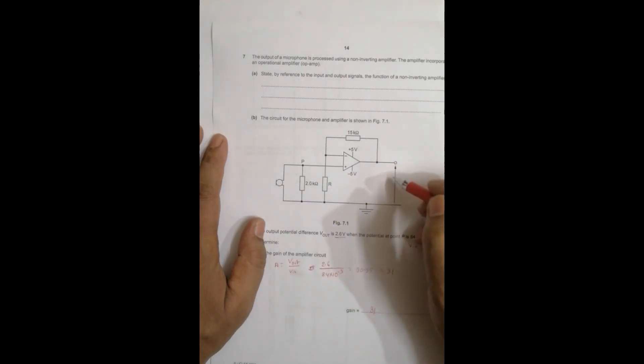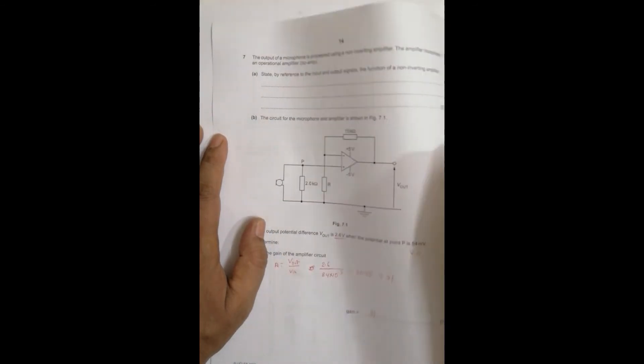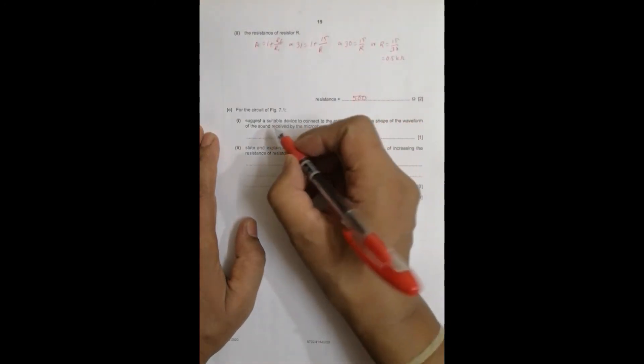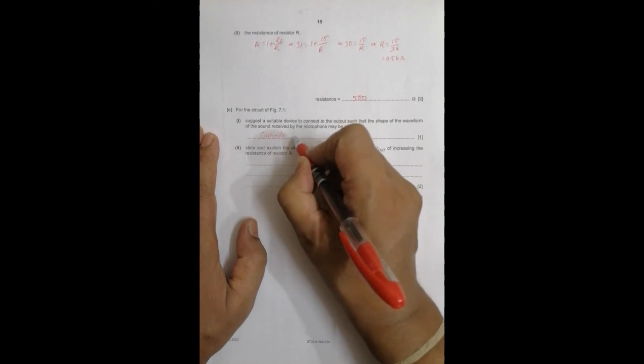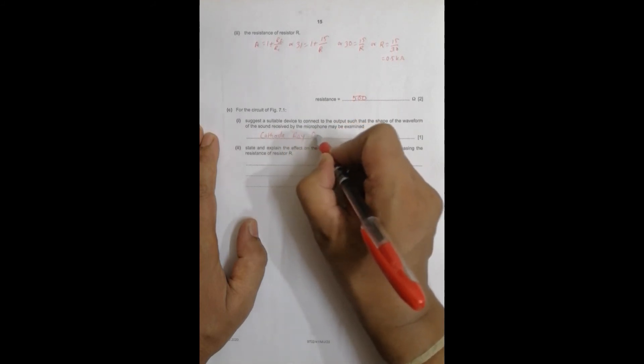That means the output here will be sound waves. So sound waves can be observed properly using of course a CRO. So it gives us idea about the amplitude, it gives idea about the frequency on the screen, everything.